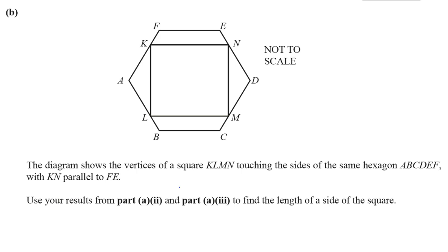Okay, question 10, part B. The diagram shows the vertices of a square K, L, M, N touching the sides of the same hexagon as we had before, A, B, C, D, E, F, with K, N parallel to F, E.